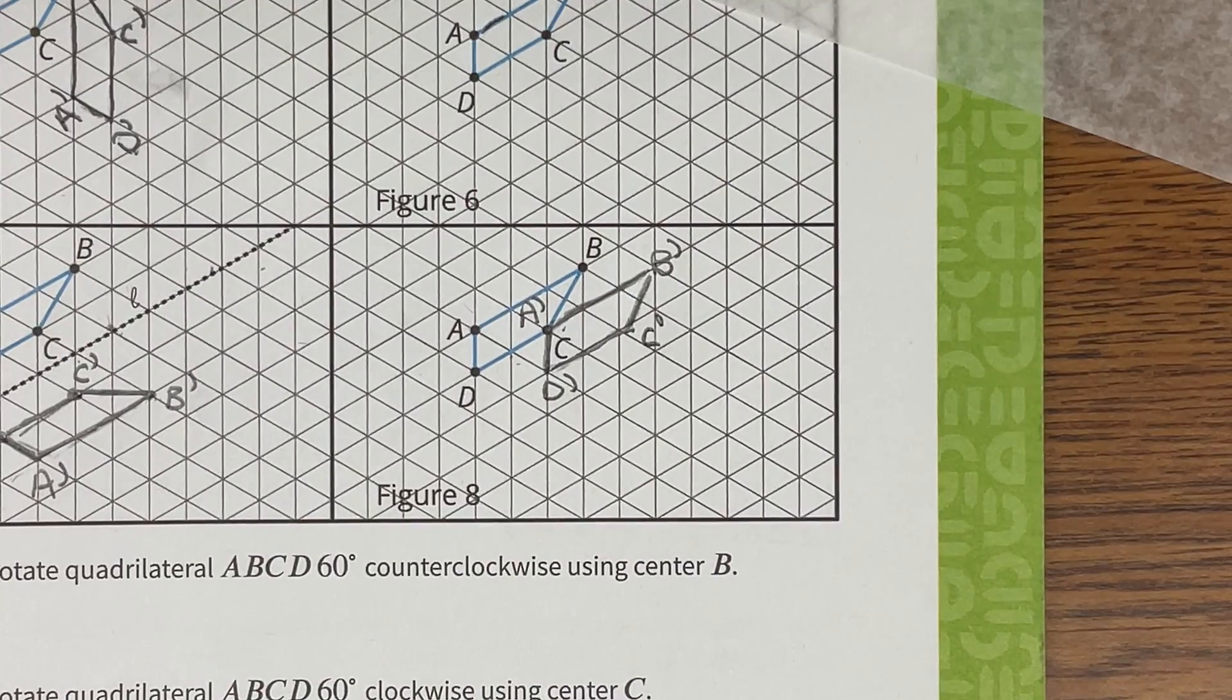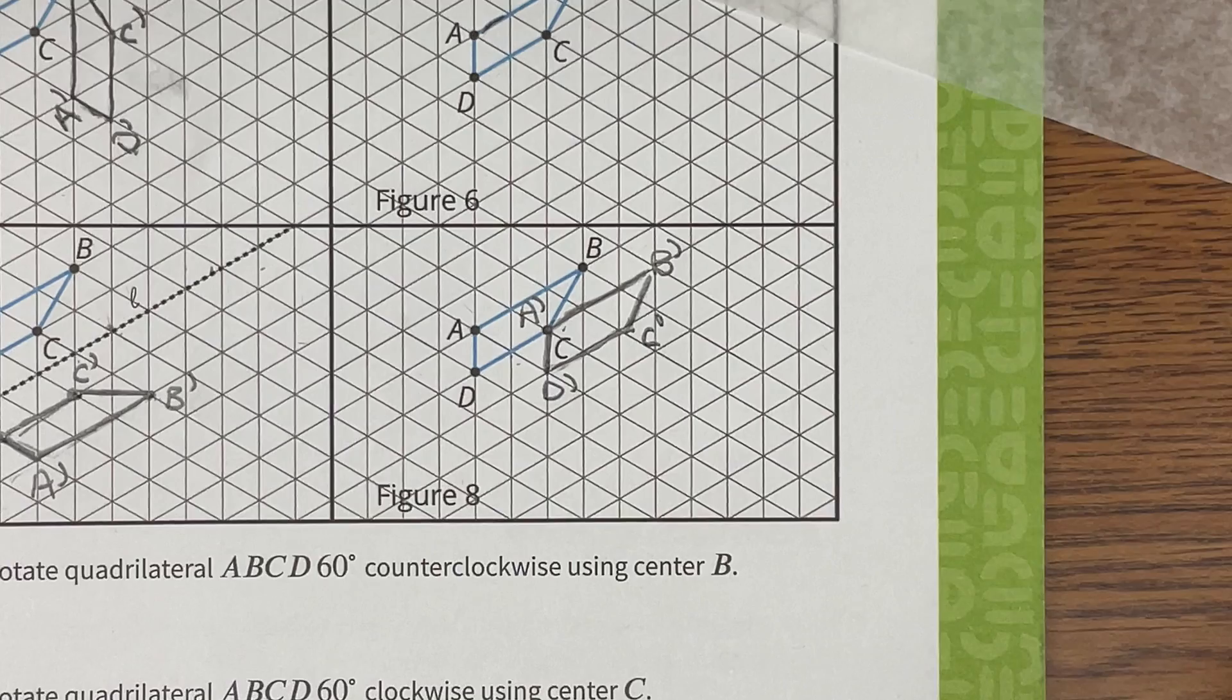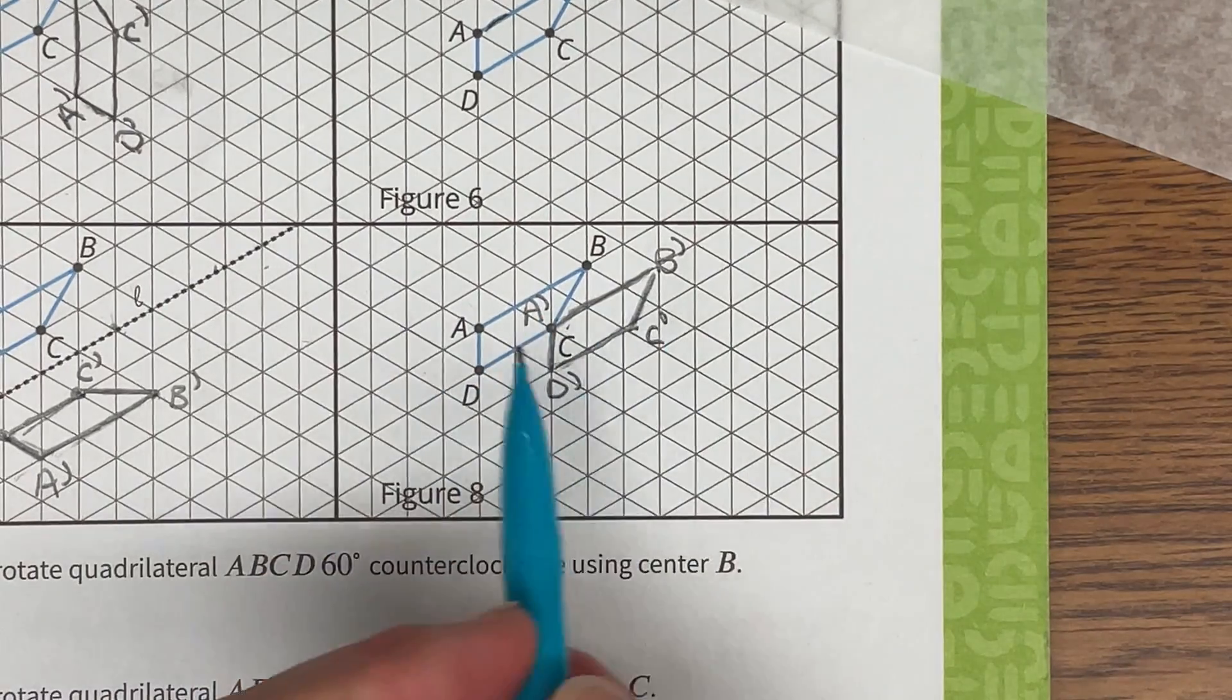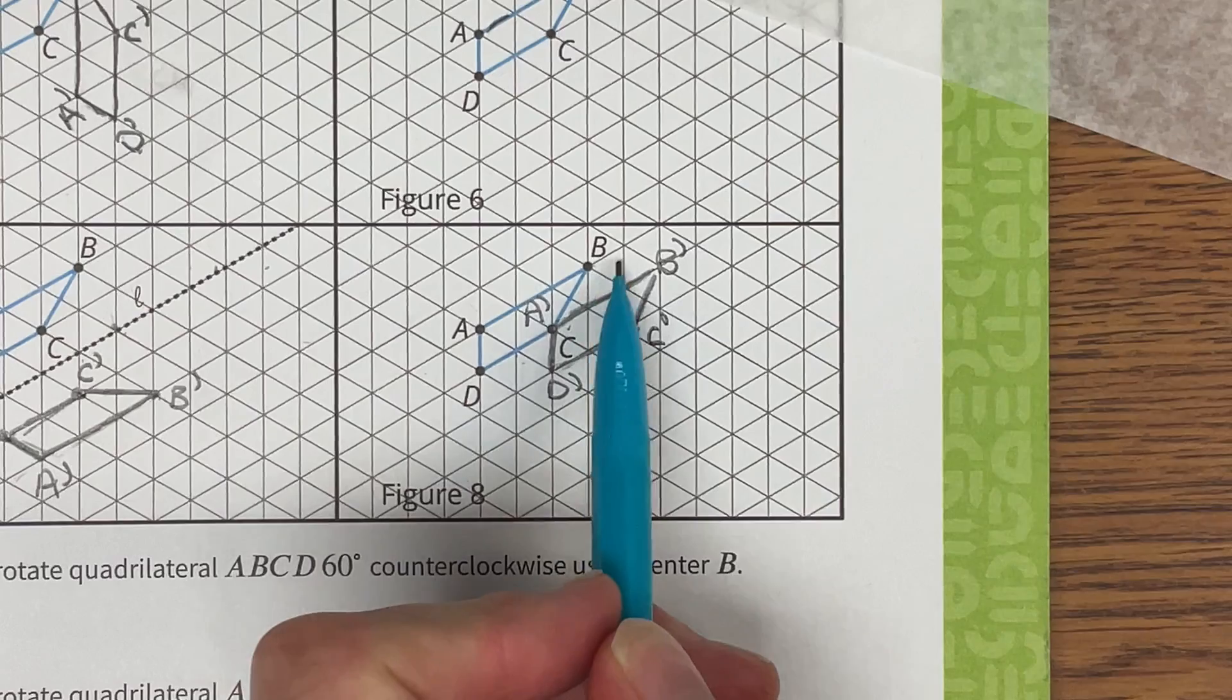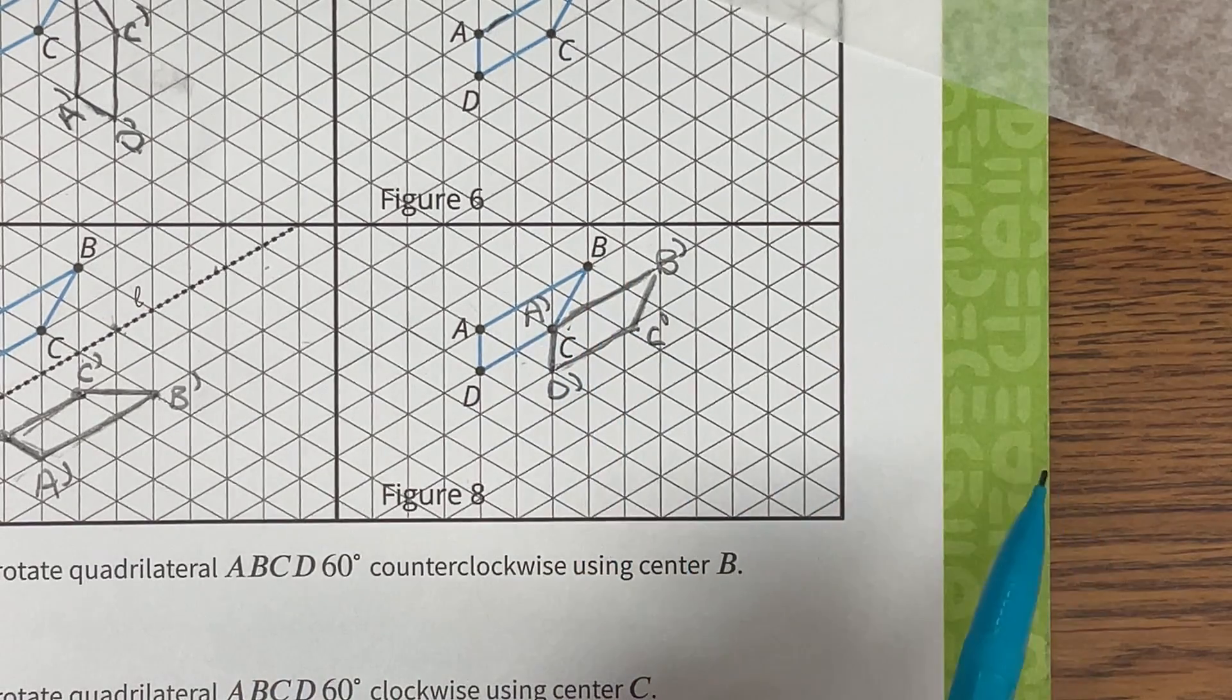So the patty paper can work for any of these type of movements. Again if we didn't use the patty paper then I would just use the triangles to see how to move it over to the right.